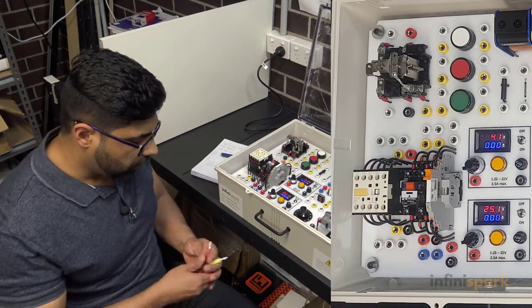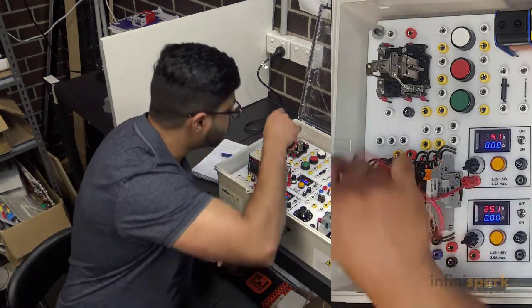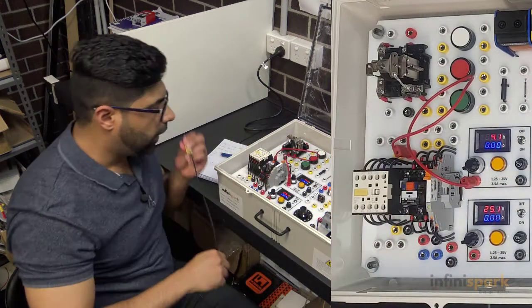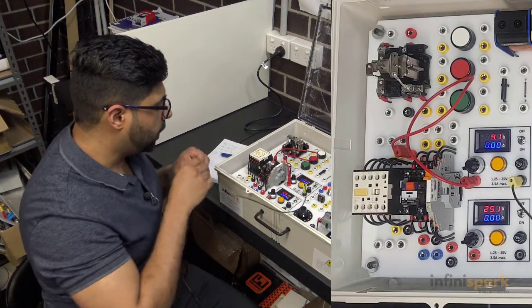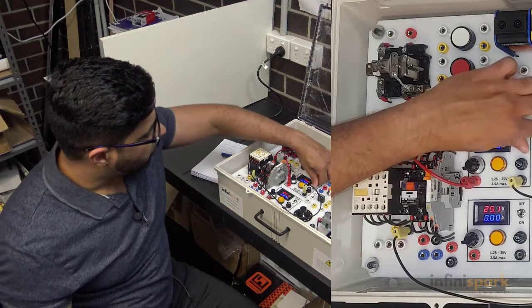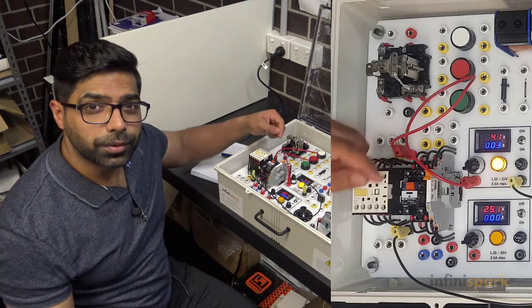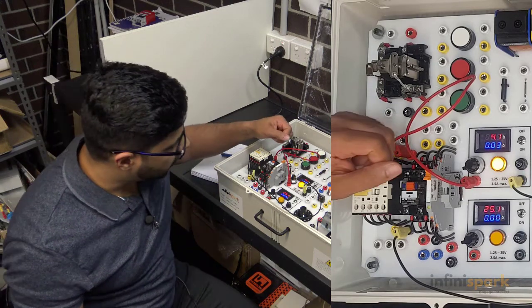The positive side of the power supply goes to the positive side of the coil, and the negative of the power supply goes to the negative side of the contactor coil. If I turn it on you see how nothing happens. I'm going to increase the voltage to find out the pull-in voltage of this contactor.